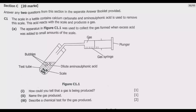Number one, we observe bubbles continuously coming out — that indicates gas is being produced. Secondly, because the gas is being produced, the plunger is going to be pushed out in the direction away from the test tube, which is a confirmation that gas is being produced.